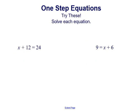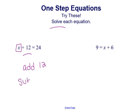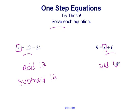Now let's try these examples. We're solving each equation, so the goal is to isolate the variable completely by itself on one side of the equal sign. In the first equation, x plus 12 equals 24, the variable x is on the left and it's being added by 12. So we need to do the inverse and subtract 12 from both sides. In the second equation, 9 equals x plus 6, the variable x is on the right and it's being added by 6, so we need to subtract 6 from both sides.